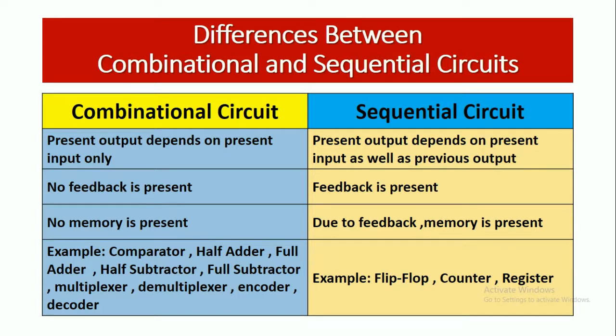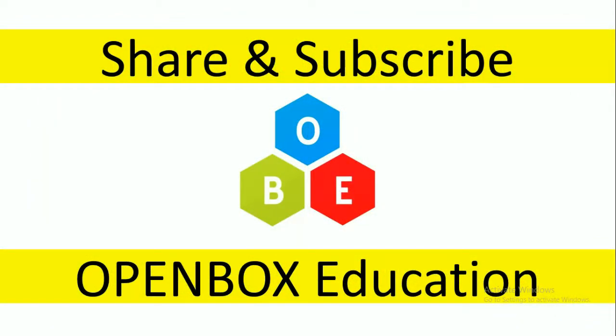Examples of combinational circuits are comparator, half adder, full adder, half subtractor, full subtractor, multiplexer, demultiplexer, encoder, and decoder. For sequential circuits, examples are flip-flop, counter, and register. To watch more videos, please subscribe and share my videos to your friends.